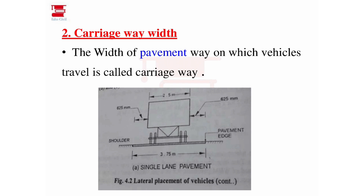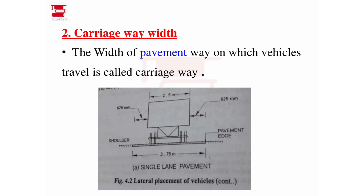The total for a single-lane pavement is 3.75m. The carriageway width for a single-lane payment is 3.75m. For a 2-lane pavement, the carriageway width is 7m, giving 3.5m per lane. The final values from this table are what matter — the specific figure dimensions are less important.